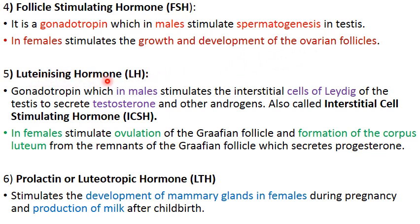Next is luteinizing hormone (LH), also a gonadotropin with different functions in males and females. In males, LH stimulates the interstitial cells of Leydig — located outside the seminiferous tubules — to secrete male hormones collectively called androgens, with testosterone as the principal hormone. Therefore, LH in males is also called interstitial cell stimulating hormone (ICSH).